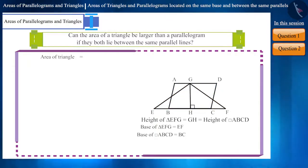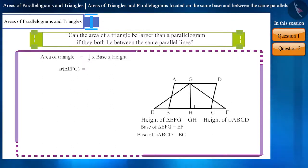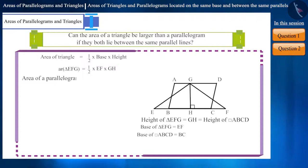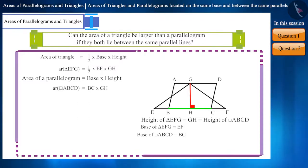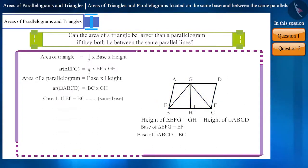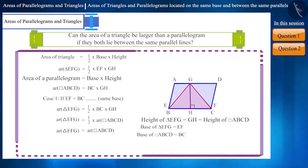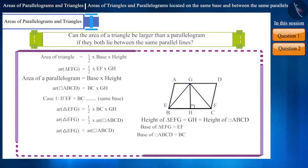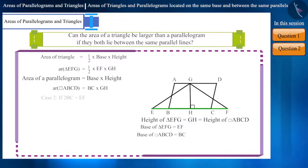The area of a triangle is half multiplied by base multiplied by height, which we can write as half multiplied by EF multiplied by GH. The area of a parallelogram is base multiplied by height, which we can write as BC multiplied by GH. If the base of the triangle and the parallelogram are the same, then the area of the triangle will be half the area of the parallelogram. If we increase the size of the base of the triangle to two times the base of the parallelogram — that is, if EF equals 2BC — then what will happen?